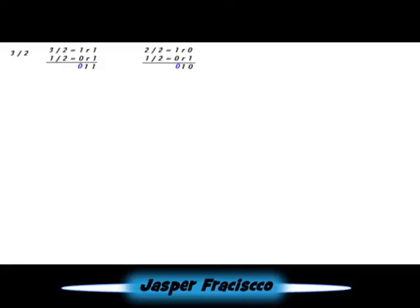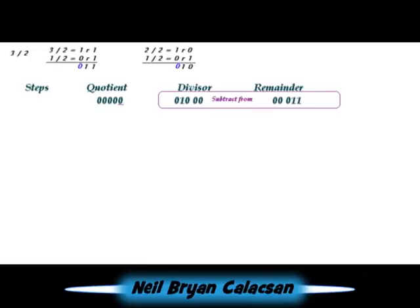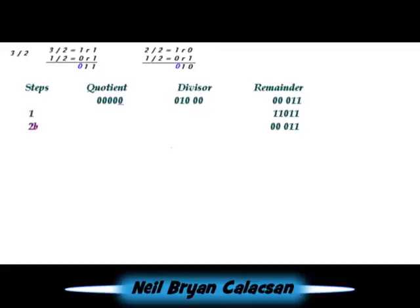Divide the given into 2. Place the divisor and remainder. Count the bits of the remainder and add it to the divisor on the right side. Then balance the remainder from the divisor. The bits of the divisor and remainder is the same as the quotient. The first step is to subtract the remainder from the divisor and place the answer in the remainder register. If the last value of the remainder is greater than 0, use step 2B. Restore the original value by adding the divisor to the remainder register.